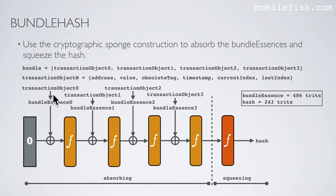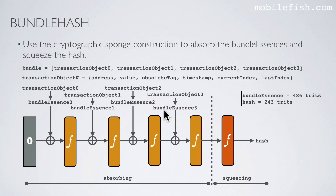For each transaction object we calculate its bundle essence. This is transaction object 0 — we calculate bundle essence 0. This is transaction object 1 — we calculate bundle essence 1. This is transaction object 2 — we calculate bundle essence 2. And this is transaction object 3 — we calculate bundle essence 3. We use the cryptographic sponge construction to absorb all the bundle essences and squeeze out the hash.